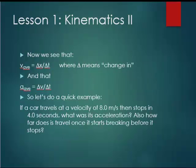Continuing with kinematics, we look at some of our definitions of our values. First, we see that the average velocity is the change in displacement over the change in time. That little triangle is the Greek letter delta, and it means change in. Next, we have the average acceleration is the change in velocity over change in time. So let's do a quick example. If a car travels at a velocity of 8 meters per second, then stops in 4 seconds, what was its acceleration? Also, how far does it travel once it starts braking before it stops? Now, I'm actually going to take a side step in a second on the next slide and talk about how we solve problems in general.